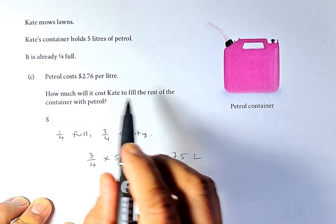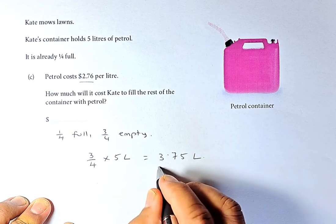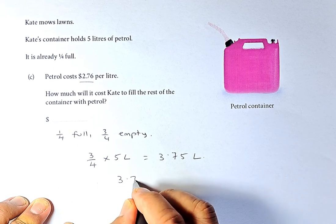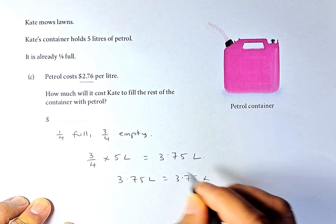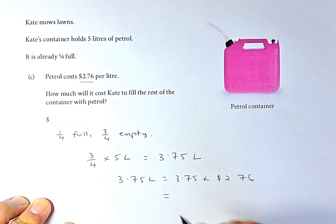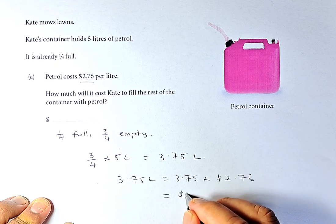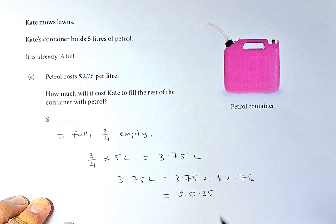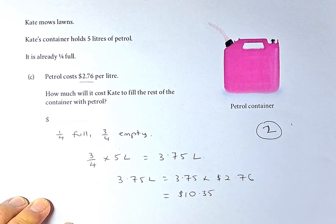To calculate the price of petrol you have to pay, the petrol costs $2.76 per litre. So 3.75 litres will be 3.75 multiplied by the cost, which is $2.76. Put in your calculator and the answer is going to be $10.35. If you get this right, you get another Outcome 2 for this paper.